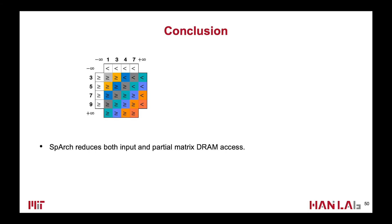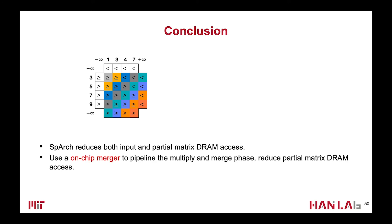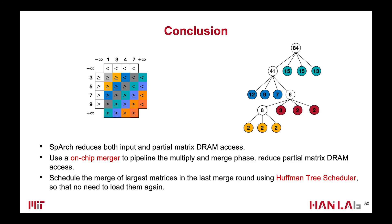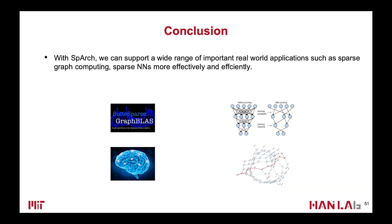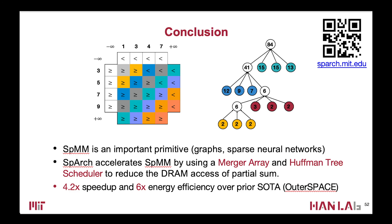In conclusion, Spark focuses on reducing both input matrix and partial matrix DRAM accesses. We use an on-chip merger to pipeline the two phases and a Huffman tree scheduler to find the optimal order to merge partial matrices. The real world is a sparse world, and most applications deal with sparse data. With Spark, we hope to support a wide range of important real-world applications, such as sparse graph computing and sparse neural networks, more efficiently and effectively. Thank you very much for your attention; you can find more information on our project website.